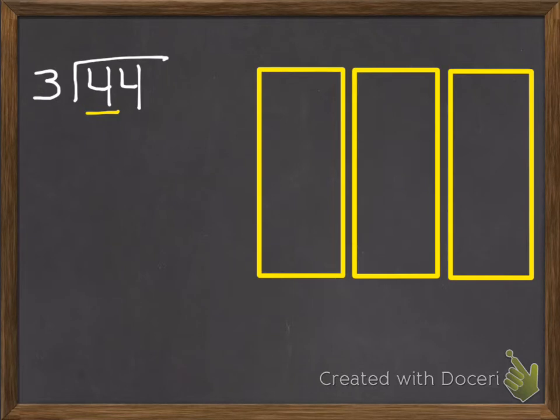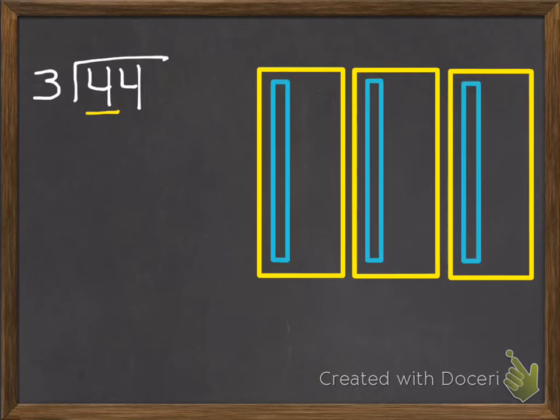So if I have 3, I can put 1 in each group. If I had 6, I could put 2, but I only have 4. So I'll put 1 ten in each group. So we can start working on our quotient. So we know they each get 1 ten. So that's going to go up above our problem, up above our tens place value.